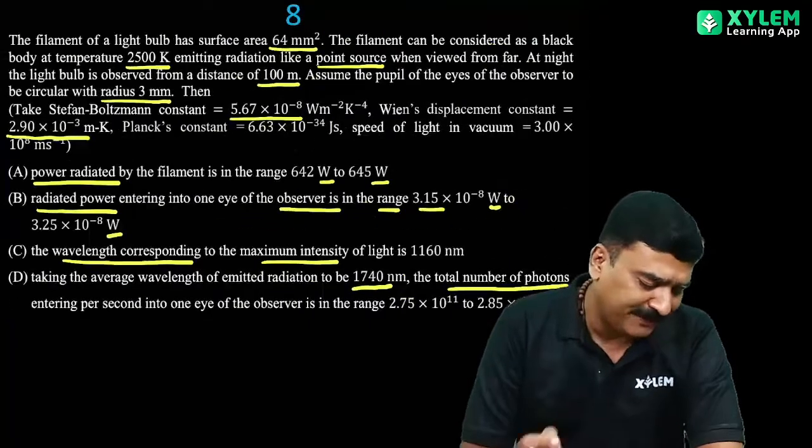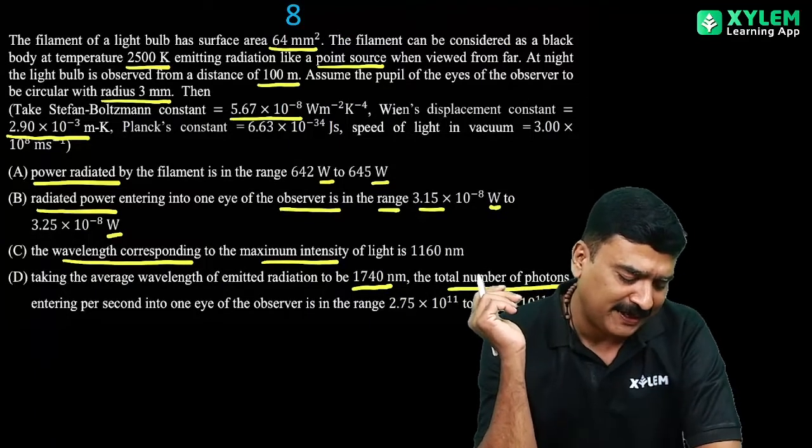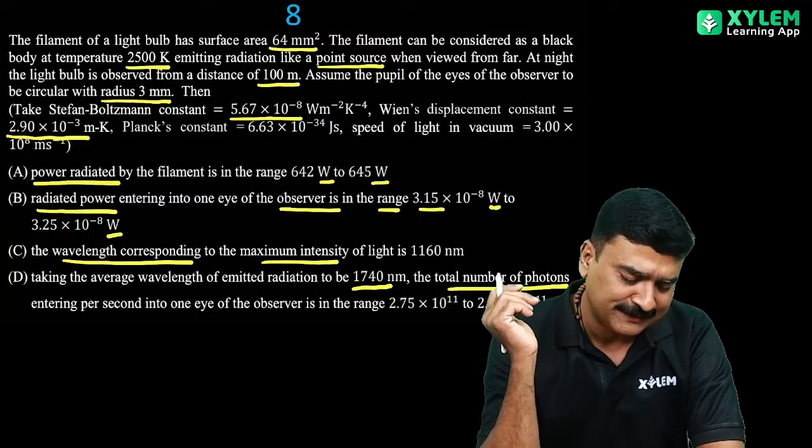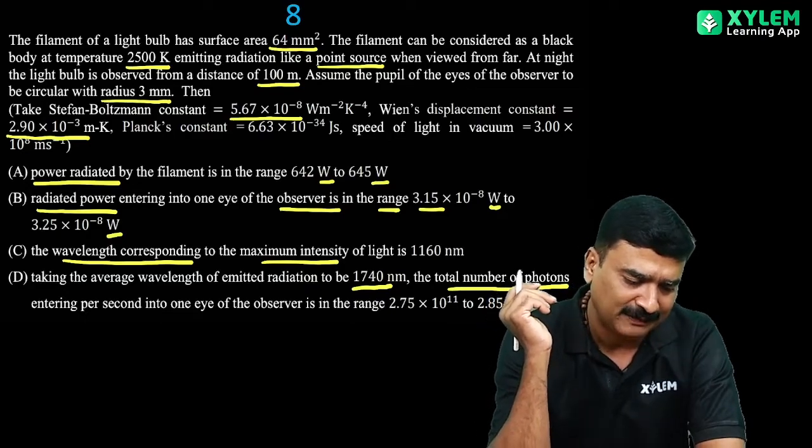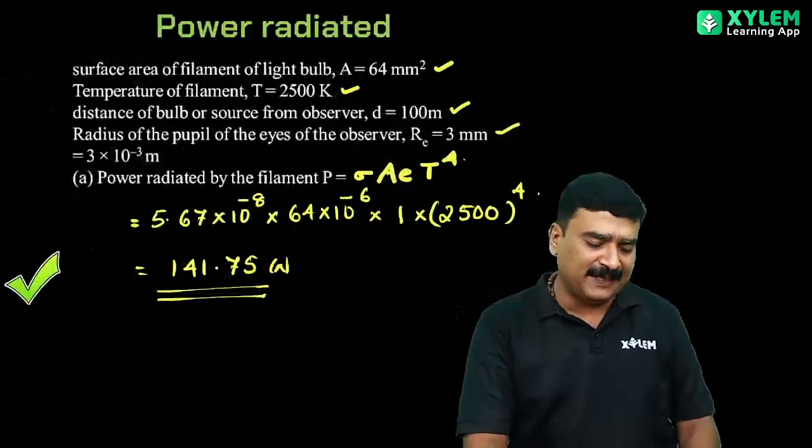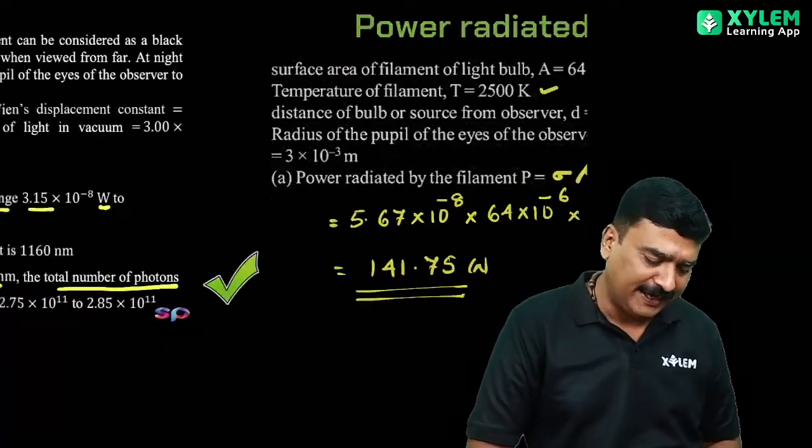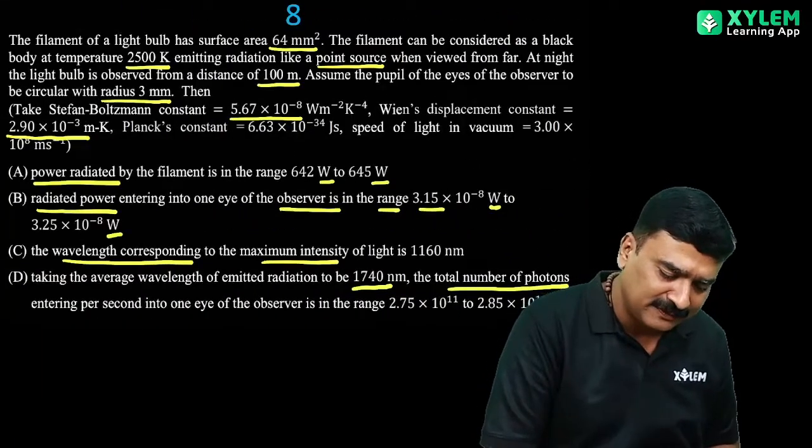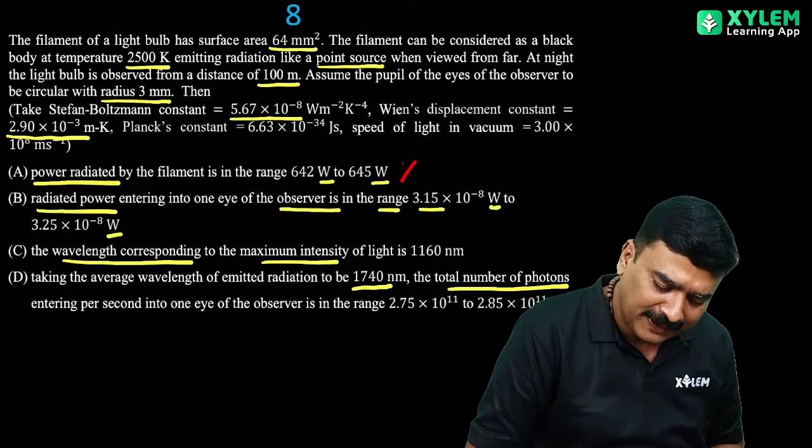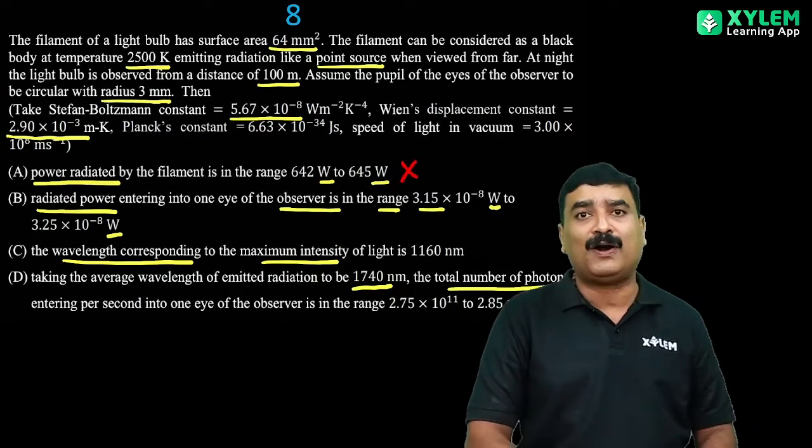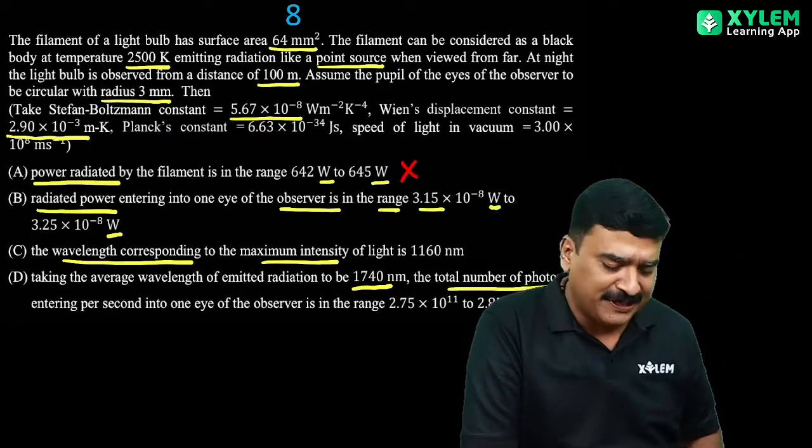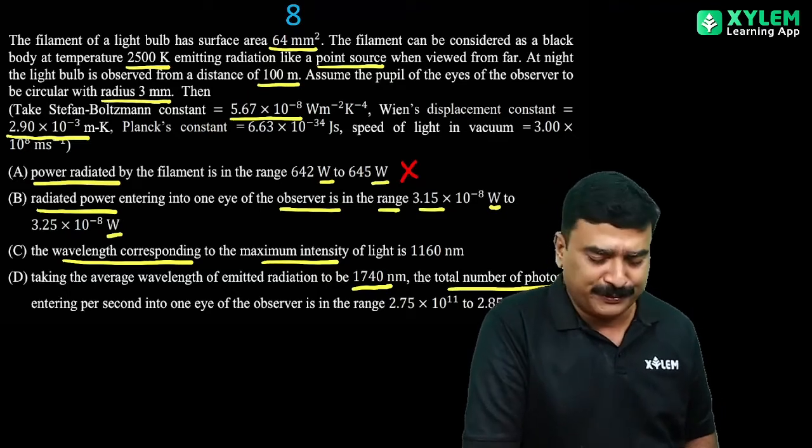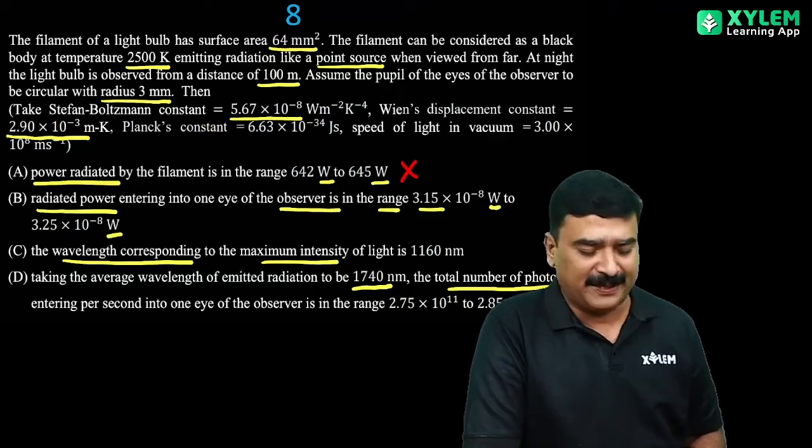That's what we need. The option says power radiated by the filament is in the range 642 to 645 watts. We can check - if we get 141 and the range is 642 to 645, then option A is incorrect. The power we calculated is 141 watts.